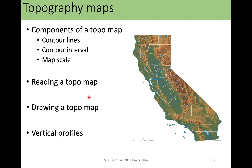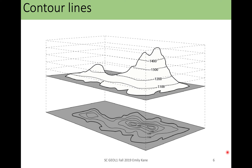So on topographic maps, there are the contours — the lines themselves — and then there's also the contour interval, which is the space between the lines, and then the scale of the map. Those are the key components. What we're going to go through today is how to read a topographic map, how to draw a topographic map, and also reading, understanding, and drawing vertical profiles — all of which go together quite nicely.